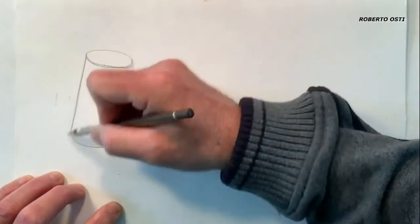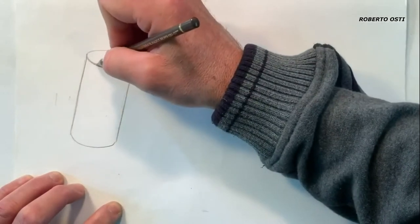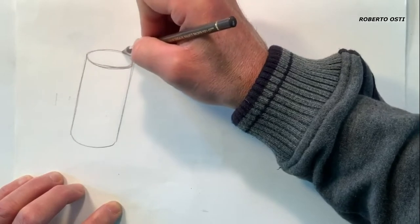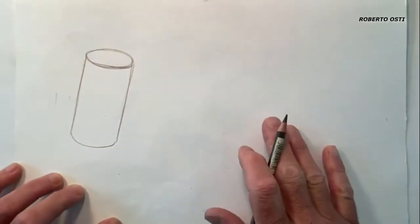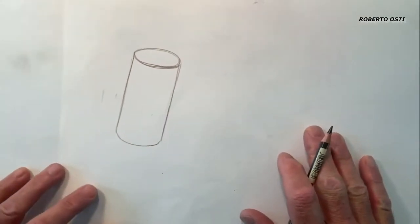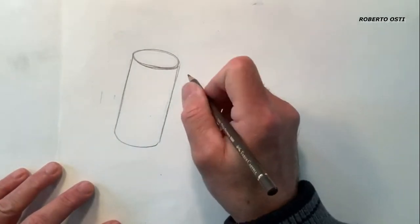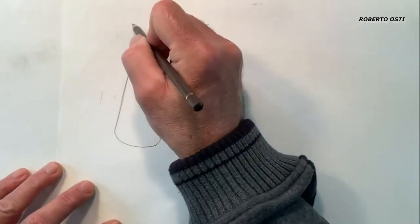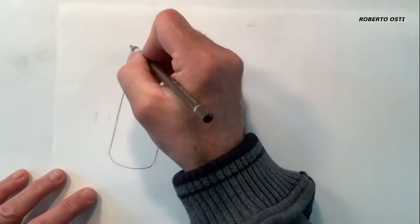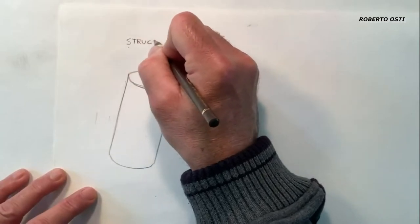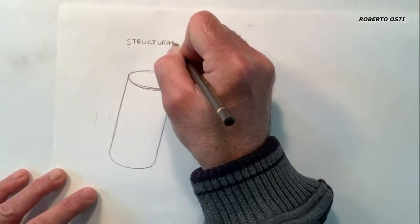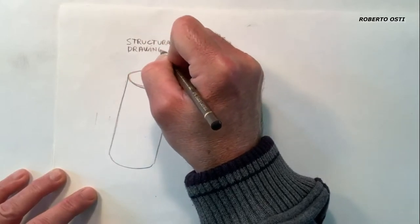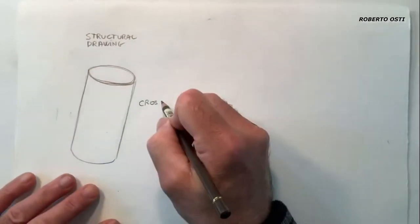And to understand this method of structural drawing, I had to understand how to analyze the structure, right? So what I'm going to do, I'm going to use a cross contour line, right? So we go back to this structural drawing, right? It's cross contour.